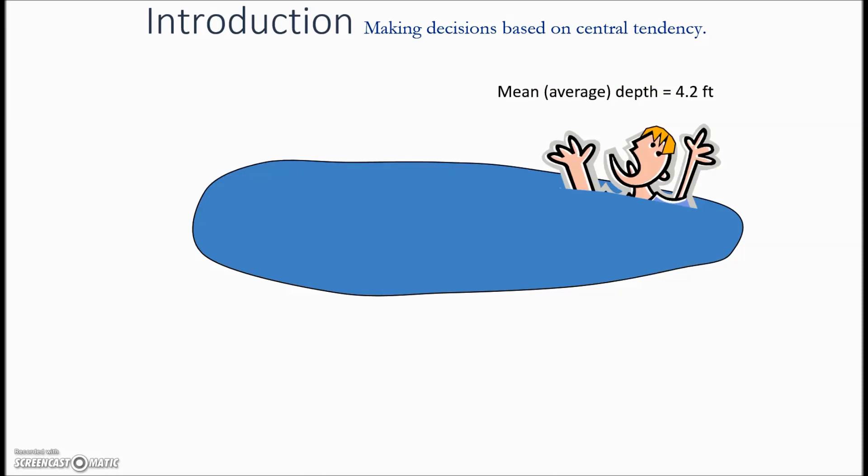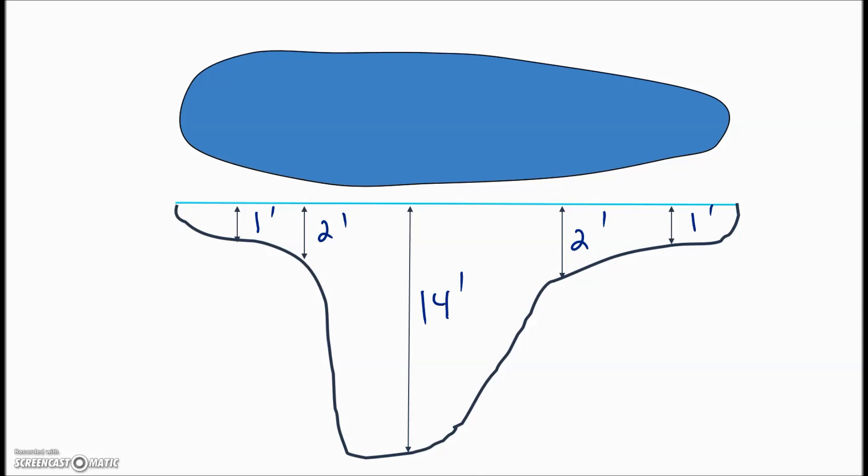While all of this is very silly it gets the point across that knowing only about central tendencies, mean in this case, doesn't always paint a complete picture. You need to know more to get a fuller understanding of a collection of data. You see here this case had the same mean but we have a maximum depth of 14 feet and that's where this boy got in trouble.